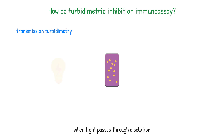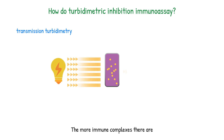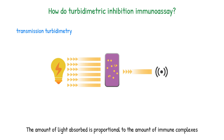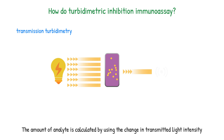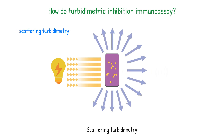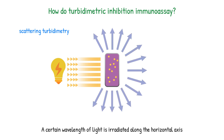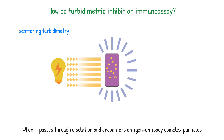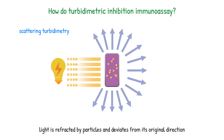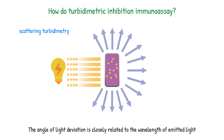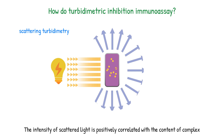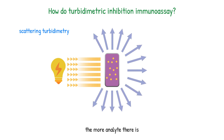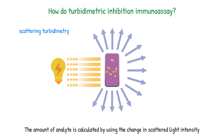In transmission turbidimetry, light passes through a solution and can be absorbed by immune complexes. The more immune complexes there are, the more light they absorb. The amount of light absorbed is proportional to the amount of immune complexes within a certain range, and the amount of analyte is calculated using the change in transmitted light intensity. In scattering turbidimetry, a certain wavelength of light is irradiated along the horizontal axis. When it passes through a solution and encounters antigen-antibody complex particles, light is refracted and deviates from its original direction. The angle of deviation is closely related to the wavelength of emitted light and the size and number of antigen-antibody complex particles. The intensity of scattered light is positively correlated with the content of the complex — the more analyte there is, the more complex is formed, and the stronger the scattered light will be.